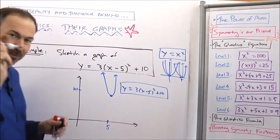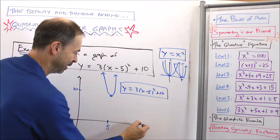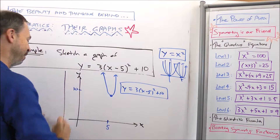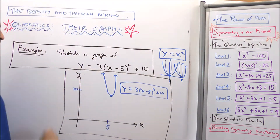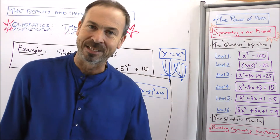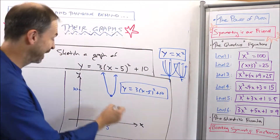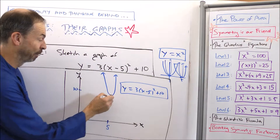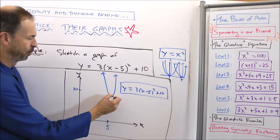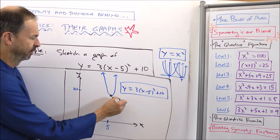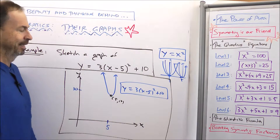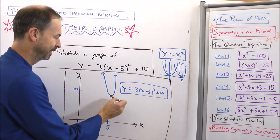The only thing I might be missing, if you want to be fussy, is to label my axes x and y. But I'm happy with that — it's showing everything that's going on. You can even say what the vertex is. Some people want to know the vertex. Well, it's the point 5, 10. I can see it.